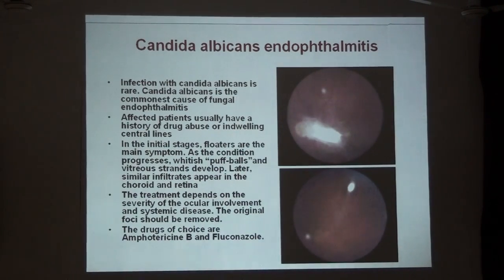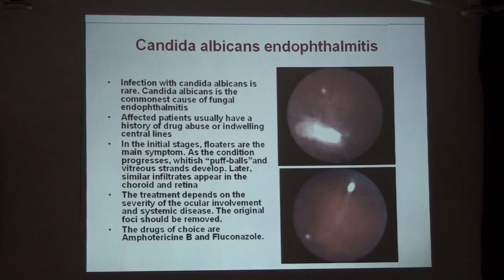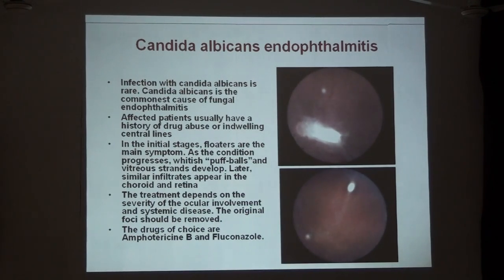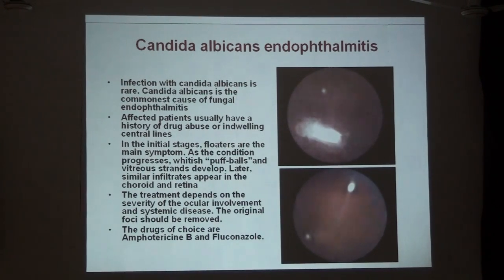Candida albicans endophthalmitis is not rare in HIV infection and is one of the commonest fungal conditions in HIV infected patients. Usually there is a background history of drug abuse or an indwelling central line. Clinical manifestations range from floaters to gradual decrease in vision. The vitreous shows characteristic puff balls. There can be retinochoroiditis affecting both the retina and choroid. Treatment depends on disease severity. First, the original foci — catheters and central lines — must be removed. Systemic fluconazole together with intravitreal amphotericin B (5 to 7 micrograms per 0.5 ml) is the treatment of choice, with a role for vitreo-retinal surgery with silicone oil tamponade.